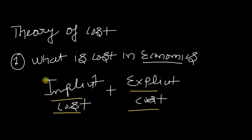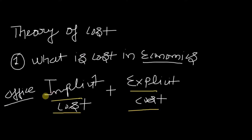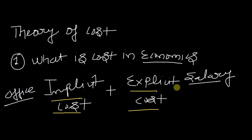Let me give some examples. If you are an owner and you supply your own property as office premises for the business, that is an implicit cost because you are not paying yourself rent. Whereas when you keep an employee and pay them a salary, money is going out — so salary is an explicit cost. Simply put, implicit cost requires no payment from the producer, while explicit cost does.